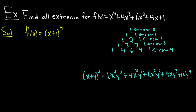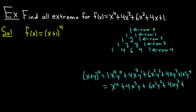That is the expansion of (x plus y) to the fourth, equal to x to the fourth plus 4x cubed y plus 6x squared y squared plus 4xy cubed plus y to the fourth. In our particular example, we have x plus 1, so y equals 1. Looking at the coefficients — 1, 4, 6, 4, 1 — that matches exactly what we have in our function, so f of x equals (x plus 1) to the fourth.